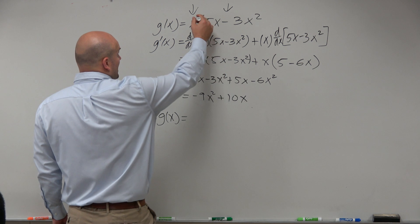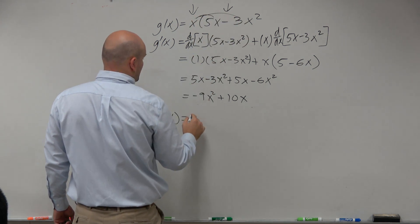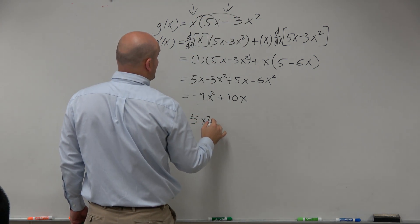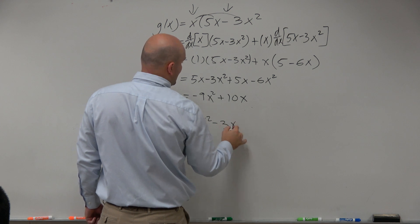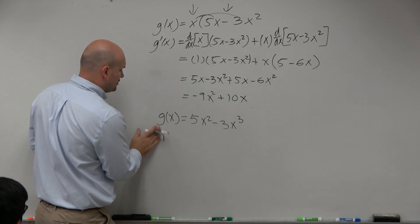So, if I was going to do the power rule, I would distribute. And I would get 5x squared minus 3x cubed. And then, when I did the power rule...